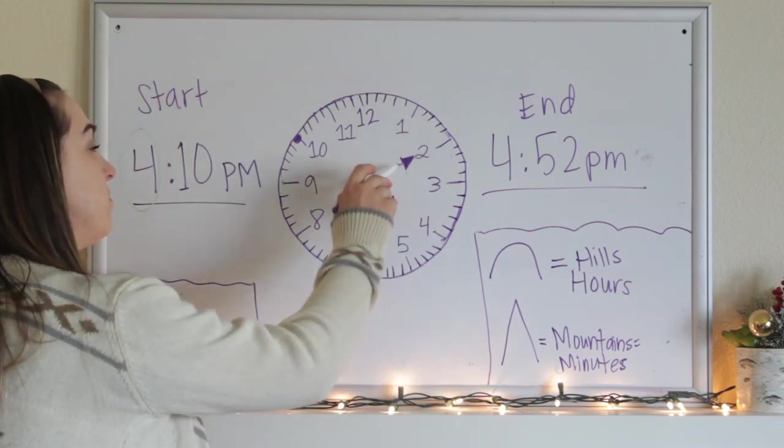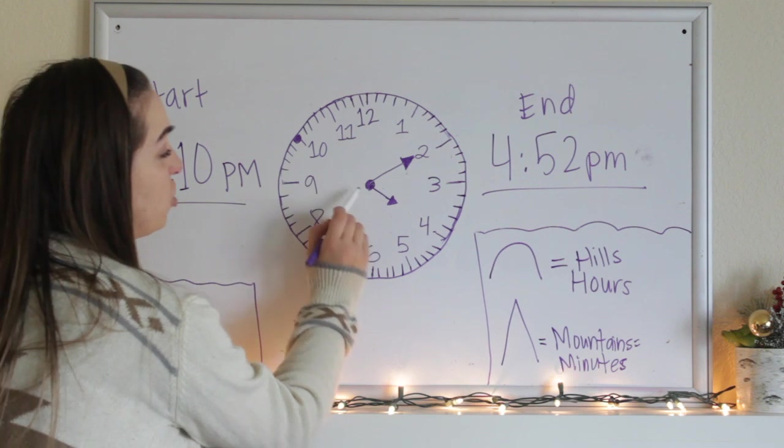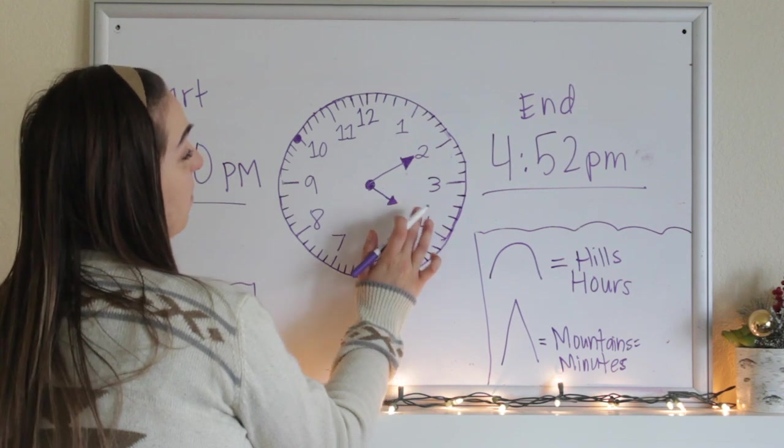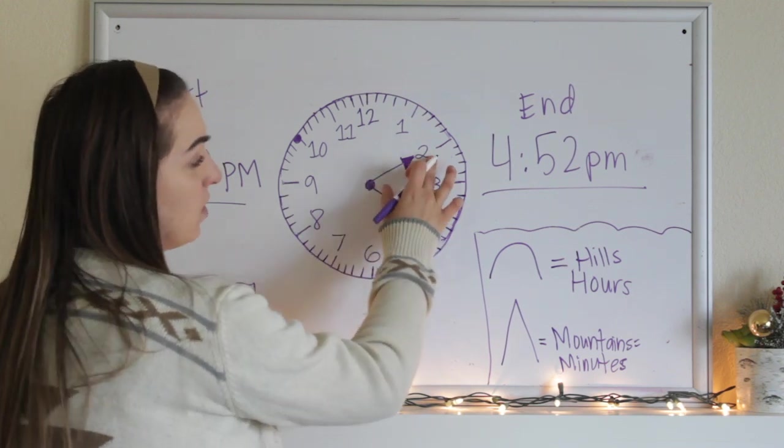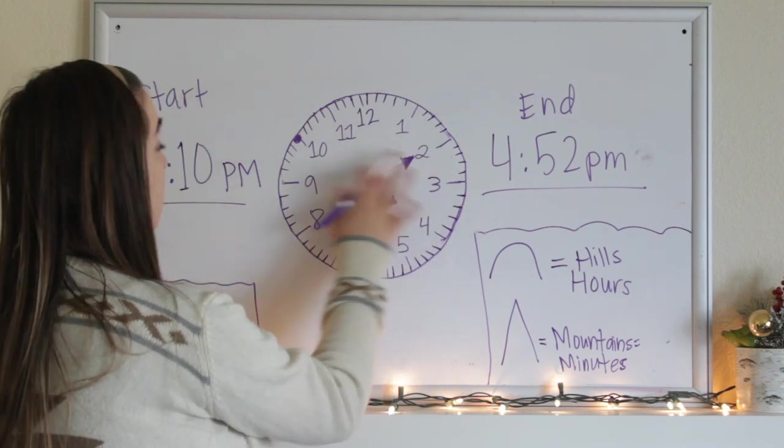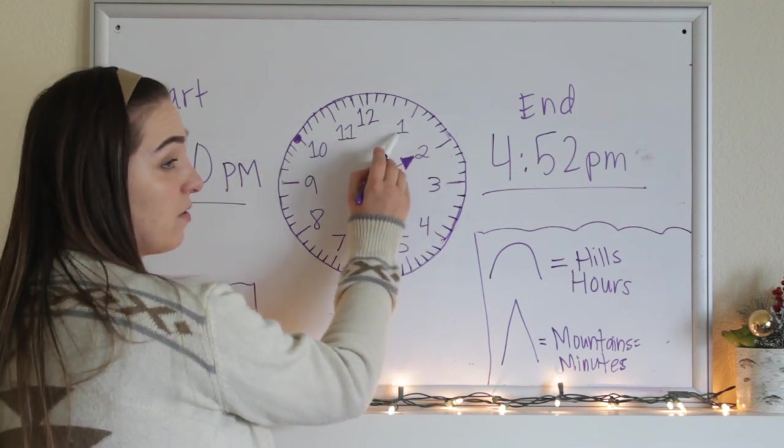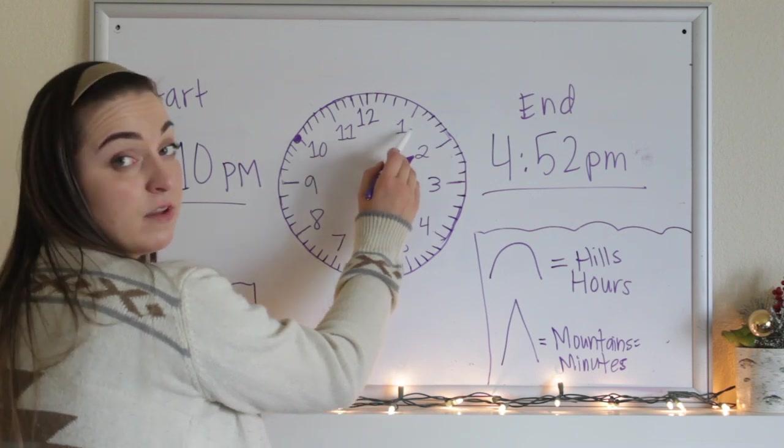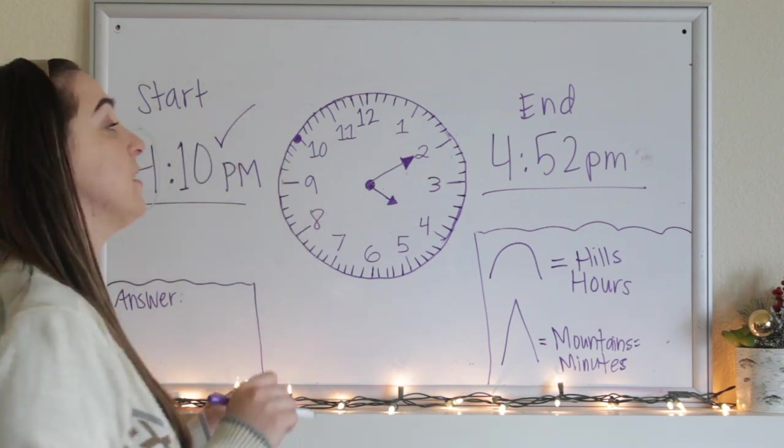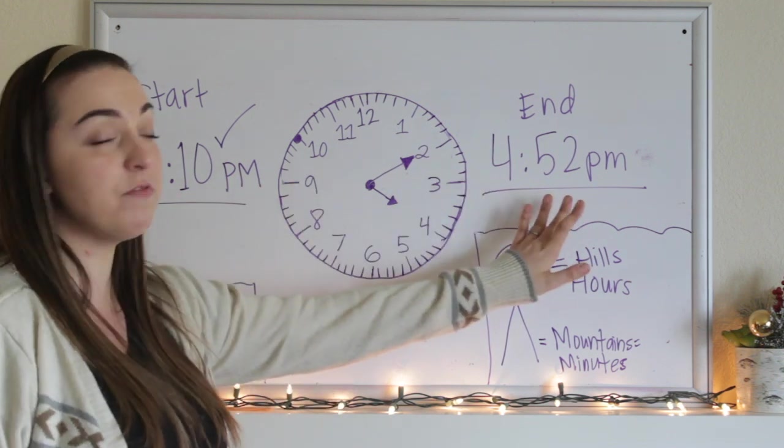So I'm going to put my time on here starting at 4:10. So as you can see I've put my short hand, which stands for my hour hand, I've put that pointing to the 4. I've put my minute hand, which is my long hand, on the 2. So if you think about why I did that, I counted by 5's in order to get to the correct minute. The correct minute was 10. So let's count by 5's until we get to 10 on this clock. We're going to start at 1. Ready, set, go. 5, 10. And that's why I landed on the 2. So we have our start time. I'm going to put a check by that because we've taken care of this now.